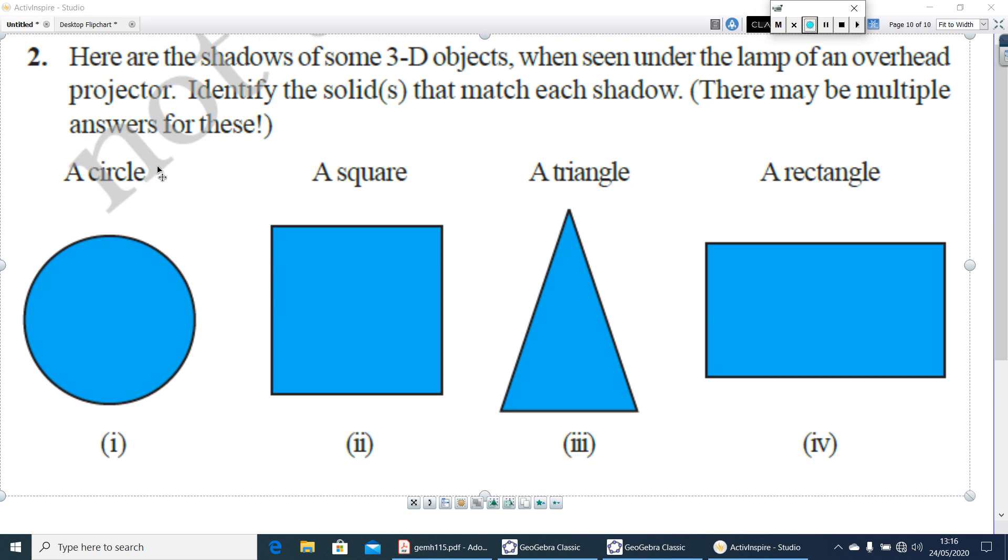In question number 2, the shadows of some 3D objects when seen under the lamp of an overhead projector. Here, it is given, these are all the shadows. Then, identify the solid that matches each shadow. You can get, suppose a circle. It will be a shadow of a sphere. And if you keep a cylinder horizontally, then also you will get a circle. Similarly, a square. It can be a cube. Or, a rectangle if you keep horizontally, you will get it. Similarly, triangle and a rectangle, multiply and serve also you can write.